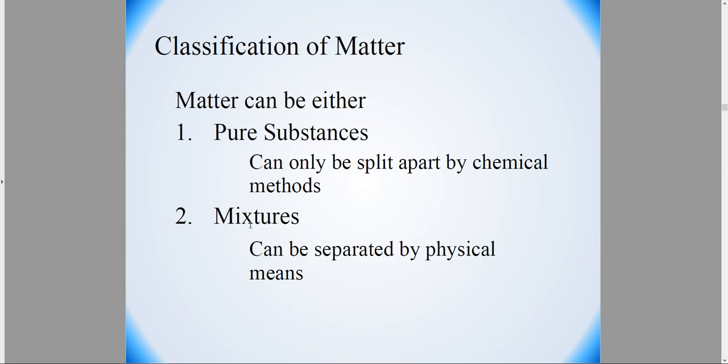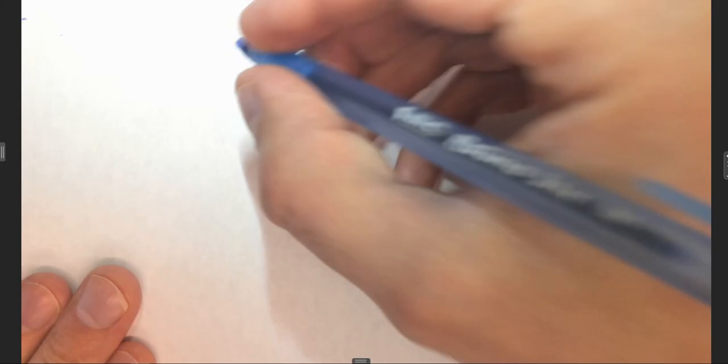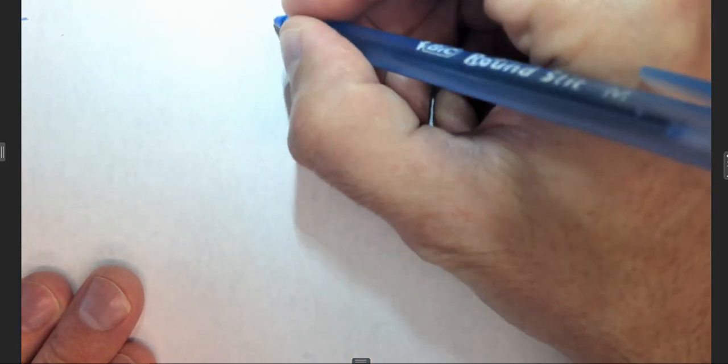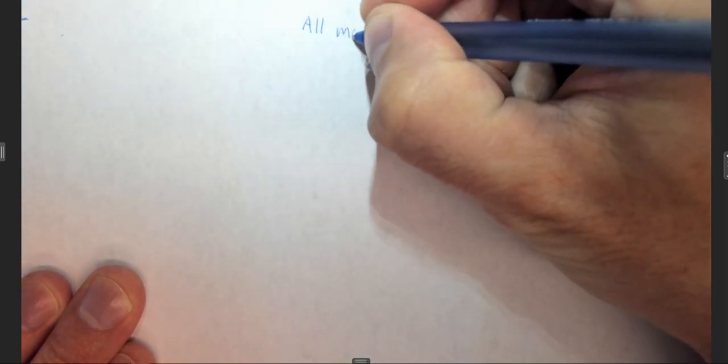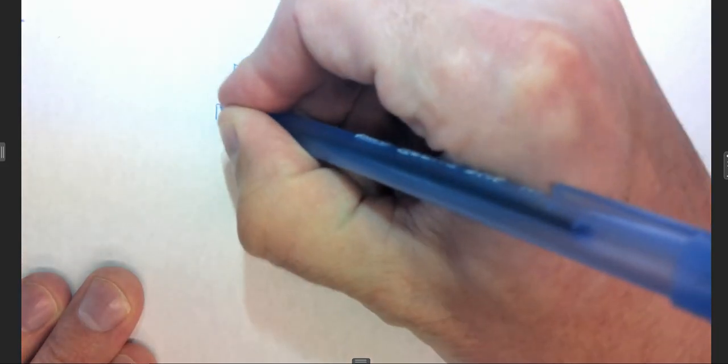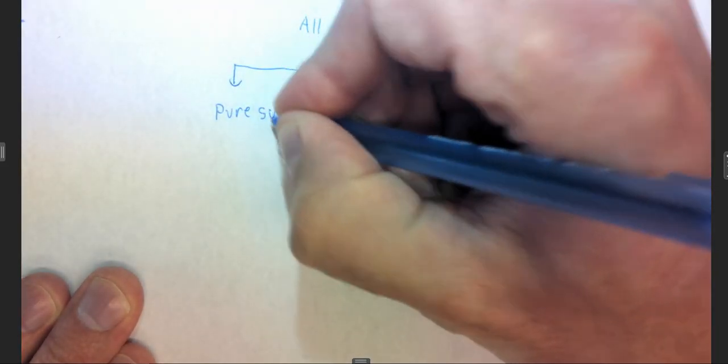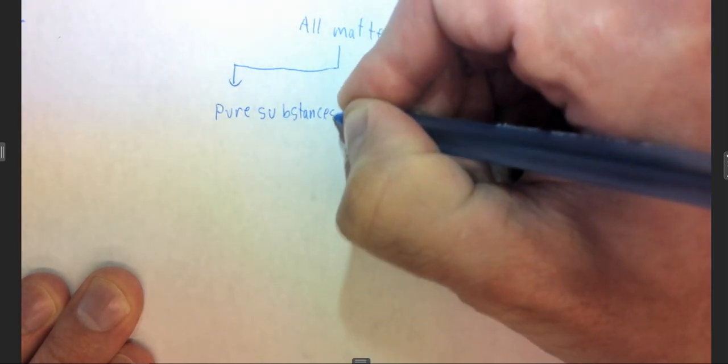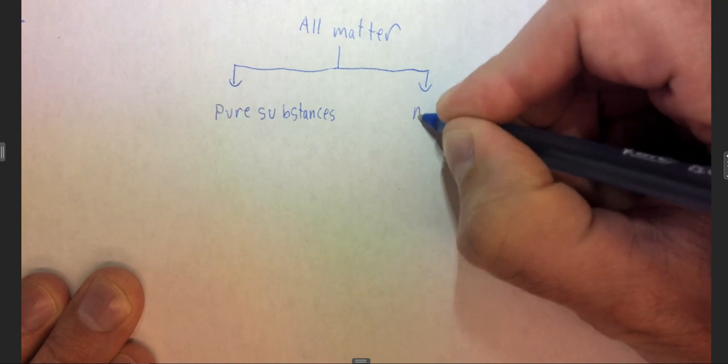But we can further classify matter into pure substances and mixtures. Pure substances can only be split apart by chemical methods, whereas mixtures can be separated by physical means. So if we start to make a flow chart here, on the top of our flow chart we have all matter, and we can further subcategorize this into pure substances and mixtures.